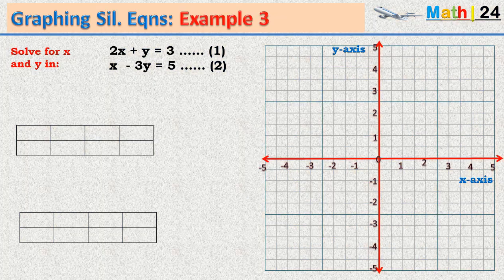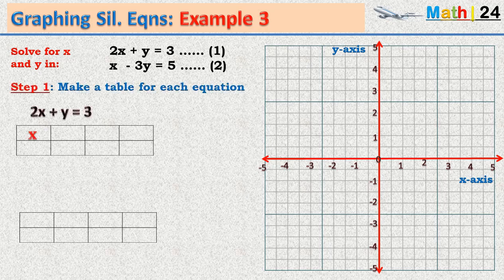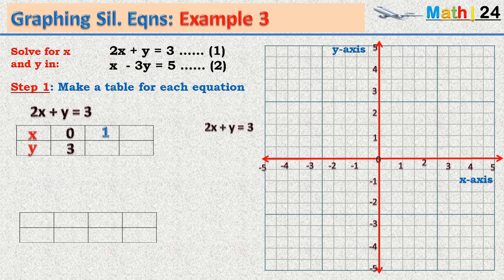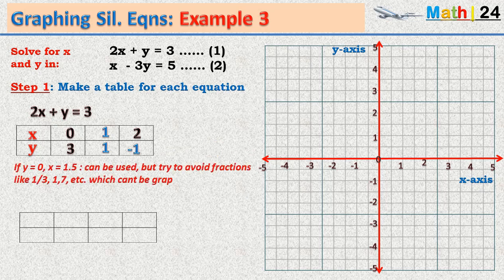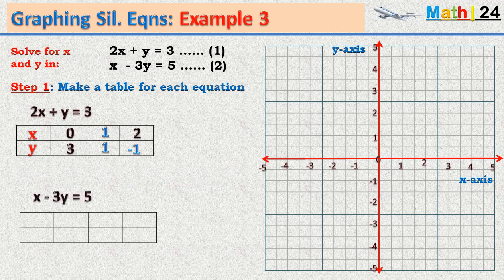Let us take a third example — this one is a bit more complex. Making a table for the first equation: if x equals zero, y equals three; if x equals one, two times one is two, so two plus y equals three and y equals one; if x equals two, two times two is four, so four plus y equals three and y equals minus one. Note that when y equals zero, x equals 1.5 — we try to avoid such fractions, especially values like one third, which cannot be graphed accurately.